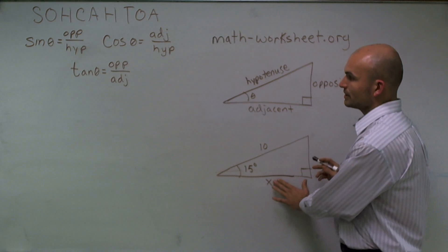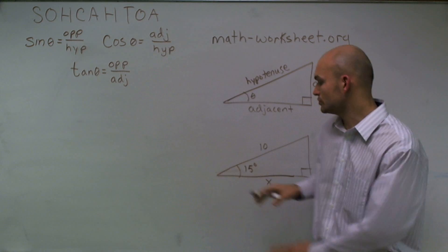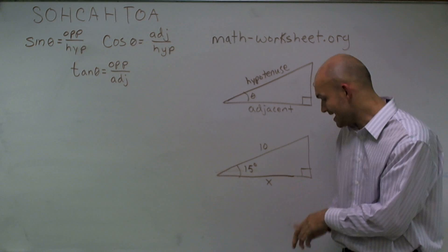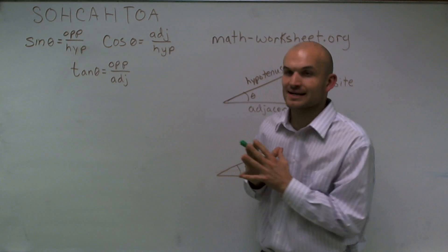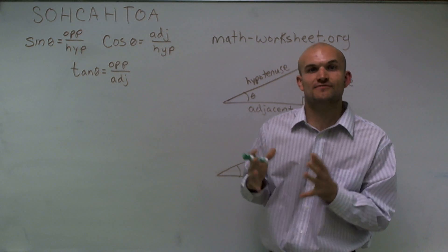So what I'm going to want to use is I'm going to want to use these functions to solve for my missing angle x. Now, I look at these three functions, and I need to determine which is going to be the best function to choose.